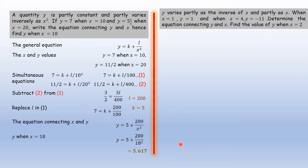Moving on to another example, very much identical to that. The question is, y varies partly as the inverse of x and partly as x. When x = 1, y = 1. When x = 4, y = -11. Determine the equation connecting x and y and the value of y when x = 2.